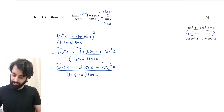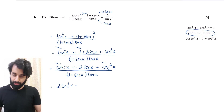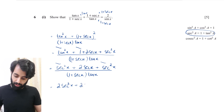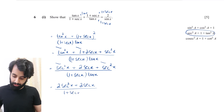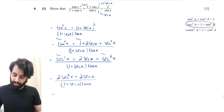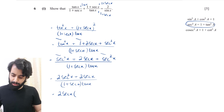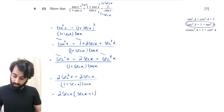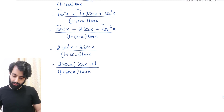sec²x + sec²x combines to give 2 sec²x, just like x² + x² = 2x². So the numerator is 2 sec²x + 2 sec x, and the denominator is (1 + sec x) times tan x. We're almost there — in the numerator I can factor out 2 sec x, which gives 2 sec x times (sec x + 1).